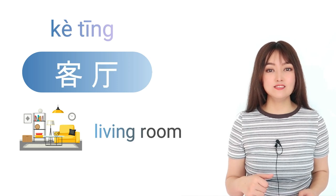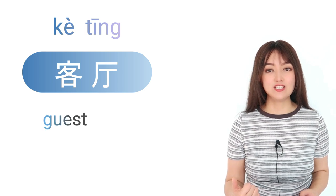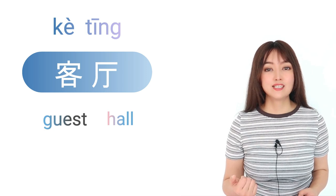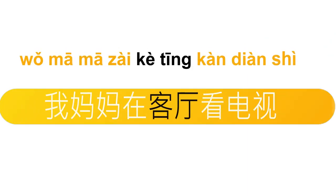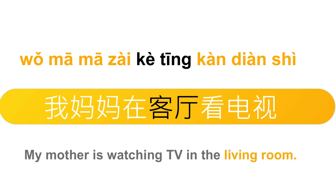下一个是客厅，living room。客的意思是客人，guest。厅的意思是 hall。客厅，where you meet the guest，living room。我妈妈在客厅看电视。My mother is watching TV in the living room.